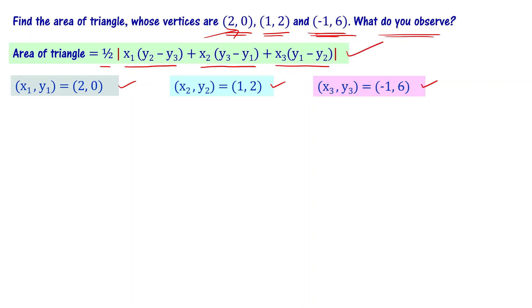When you do that, area of the triangle can be written as half times modulus of 2 times (2 minus 6) that is x1 times (y2 minus y3), plus x2 times (y3 minus y1), plus x3 times (y1 minus y2). So we can further simplify this, 2 times -4, this is 1 times 6 and this is -1 times -2.